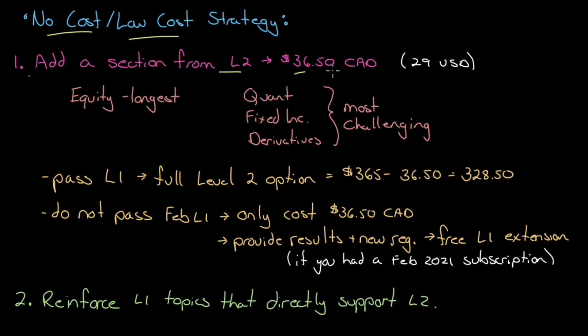Just add one section, $36.50 Canadian, or if you think better in U.S. dollars, it's $29 U.S. And there are two ways you can think about what section you want to add.